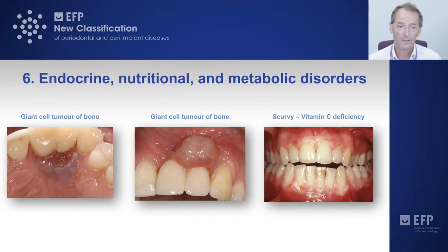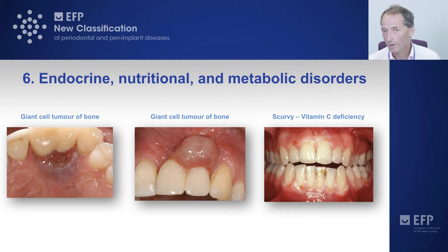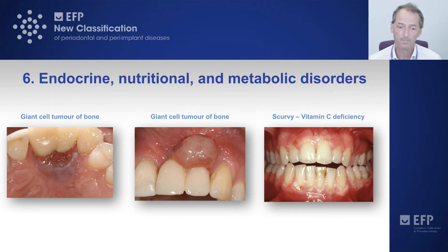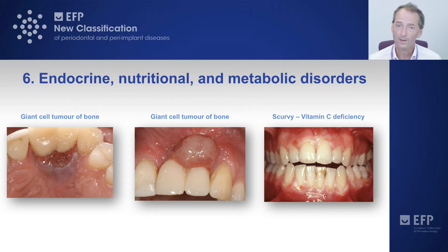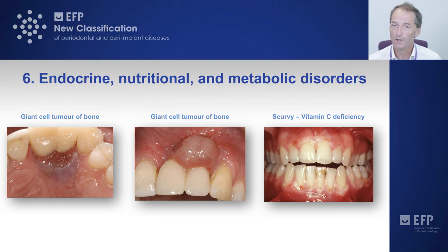Group six are the endocrine, nutritional and metabolic disorders. These include rare lesions such as the giant cell tumour of bone shown here, which has arisen around two implants. The implants are unlikely to have caused it but are associated with it and must be removed as part of treatment. Then there are nutritional disorders — this 19-year-old patient is suffering from vitamin C deficiency, or scurvy, presenting with atypical ulceration and exposure of alveolar bone. It won't respond to metronidazole or penicillin, but will respond to vitamin C supplementation, with re-epithelialisation within two weeks.